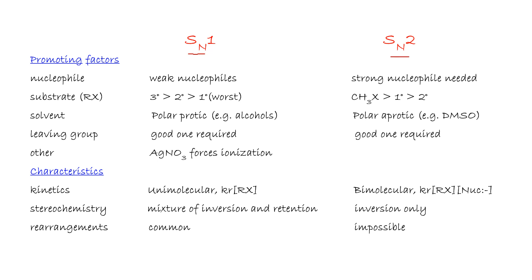For SN1, the nucleophile will be a weak nucleophile, but for SN2 we need a strong nucleophile. Regarding substrate, the tertiary alkyl halide will react faster than secondary, which reacts faster than primary for SN1. For SN2, the methyl halide will be fastest, then primary, then secondary.